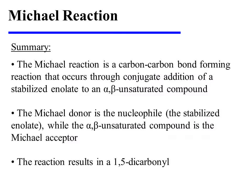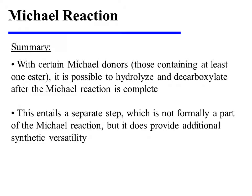In summary, the Michael reaction is a carbon-carbon bond-forming reaction that occurs through conjugate addition of a stabilized enolate to an alpha-beta unsaturated compound. The Michael donor is the nucleophile — the stabilized enolate — while the alpha-beta unsaturated compound is the Michael acceptor, and the reaction results in a 1,5-dicarbonyl. With Michael donors that contain at least one ester, it is possible to hydrolyze and decarboxylate after the Michael reaction is complete. This, however, entails a separate step, which is not formally a part of the Michael reaction, but it does provide additional synthetic versatility.